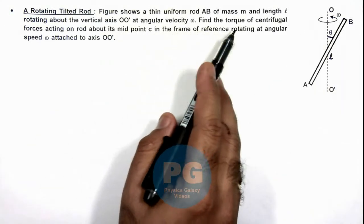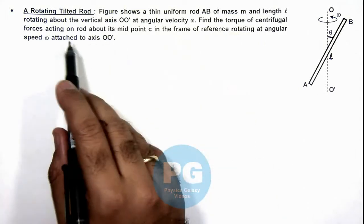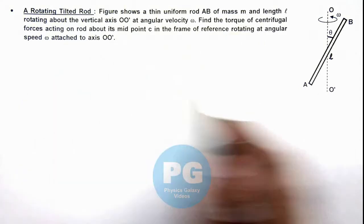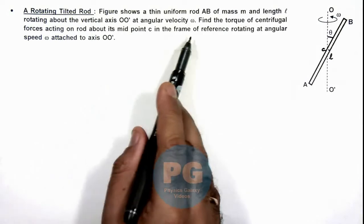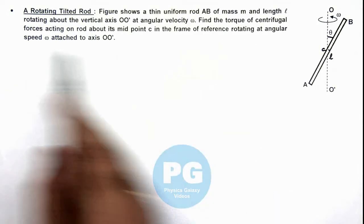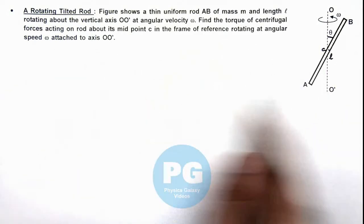Here we are required to find the torque of centrifugal forces acting on rod about the midpoint of the rod C, in the frame of reference rotating at angular speed omega, attached to the axis OO'.